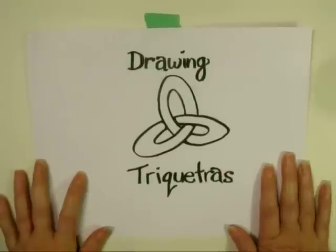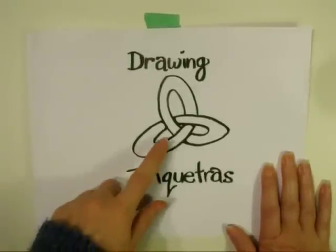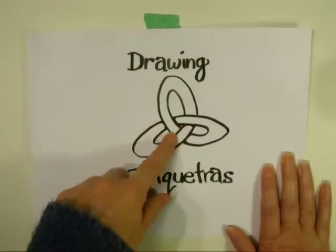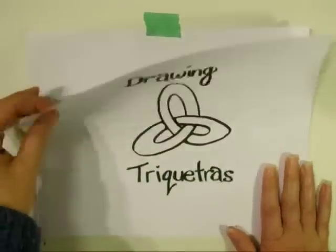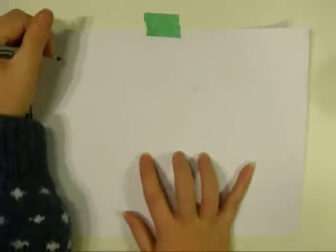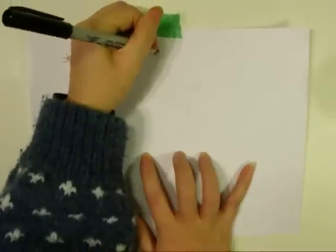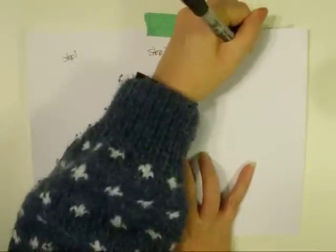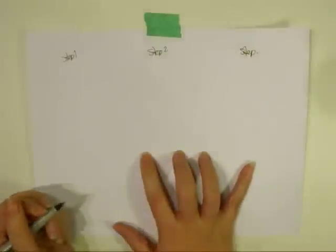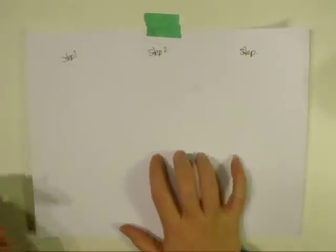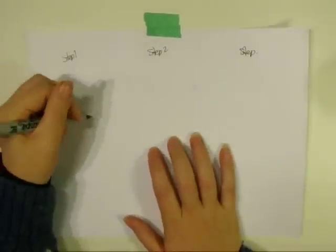The first two ways of drawing a Triquetra involve starting with the white space. So as we draw, I'll show you step one, step two, and step three. Step one, we're basically defining our area.